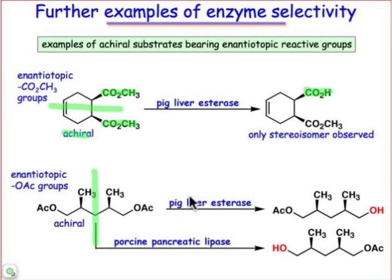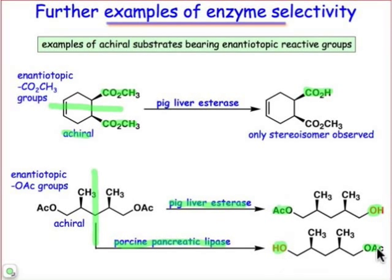In the bottom case, we see that we could subject this molecule — which has enantiotopic acetate groups — to two different enzymes. In one case, one of the acetate groups hydrolyzes, and in the second case, the other acetate group hydrolyzes. Both products have a single acetate group remaining. Again, this is a difference in how the substrate is bound in the enzyme active site relative to where the active site side chains are positioned.